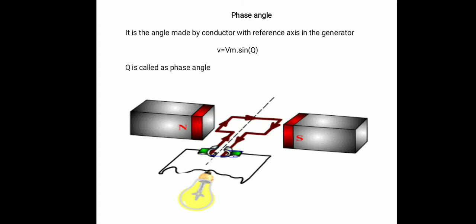When that coil starts rotating it cuts the magnetic flux, and according to Faraday's law, if any conductor cuts a varying magnetic field, an EMF is induced into that conductor. The angle made by that coil with respect to the reference axis is called the phase angle. The instantaneous voltage induced into that coil is v = Vm sin(θ), and the value of instantaneous voltage depends on the phase angle theta.